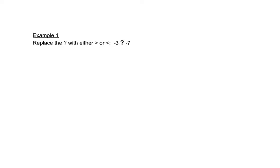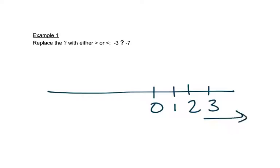So let's look at this problem. Let's think about this on a number line. If this is zero, this would be one, this would be two. Positive numbers go to the right, negative numbers go to the left.